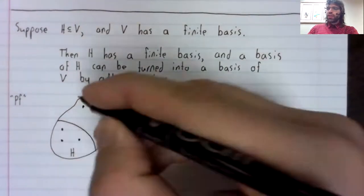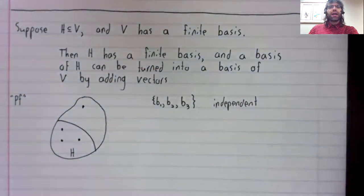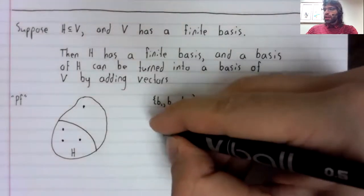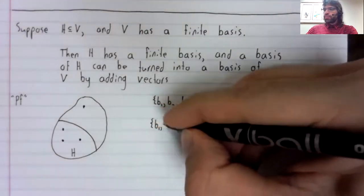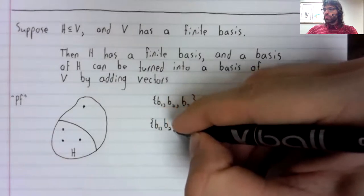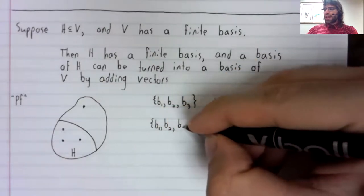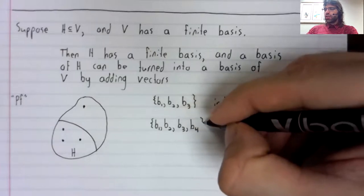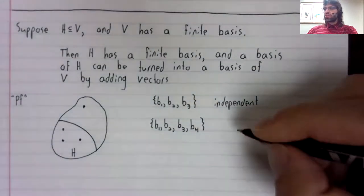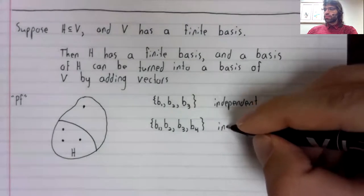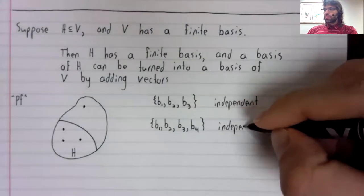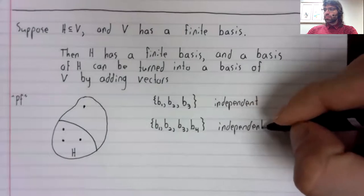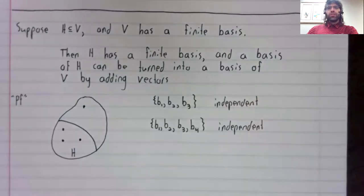And all we're going to do is we're going to look at the part of V that isn't H, and we're going to pick a vector, any vector, and we're going to add that vector to this set.